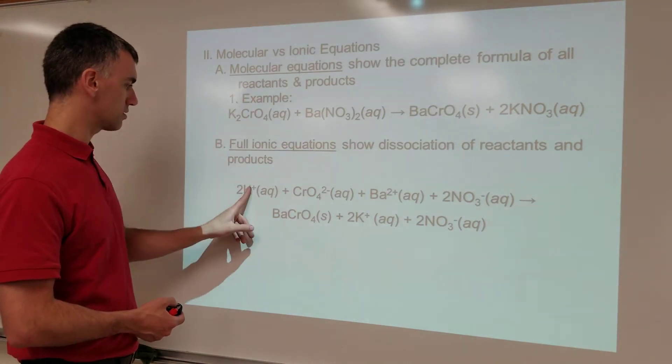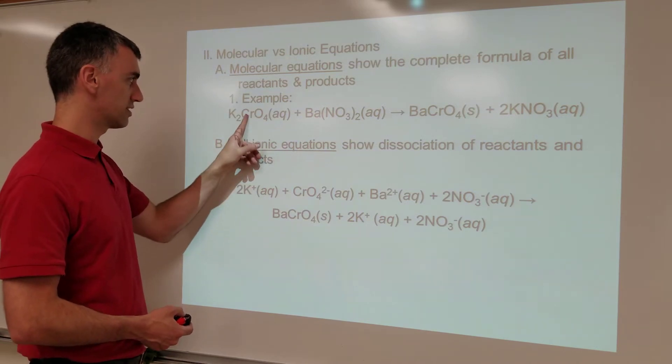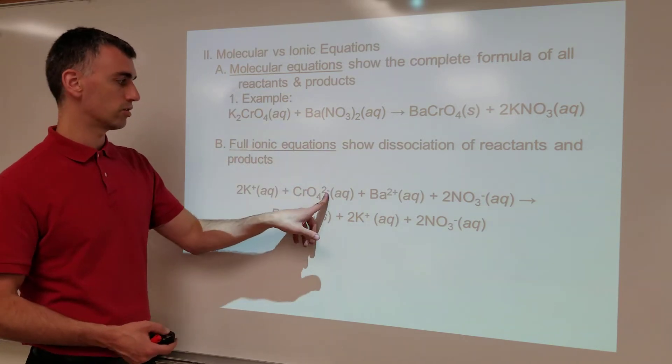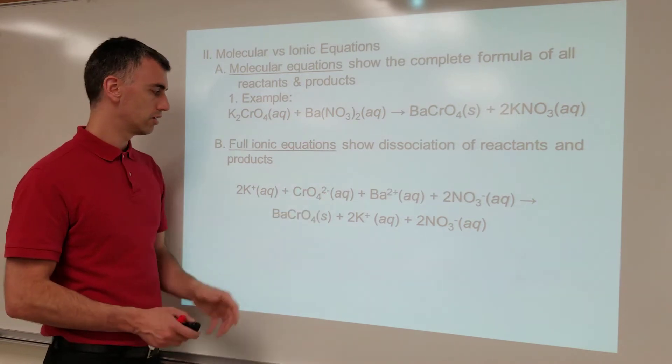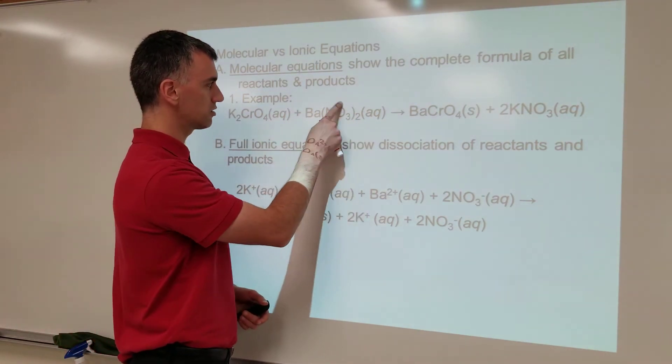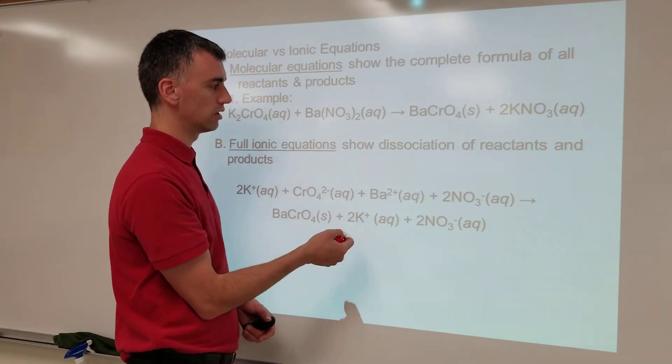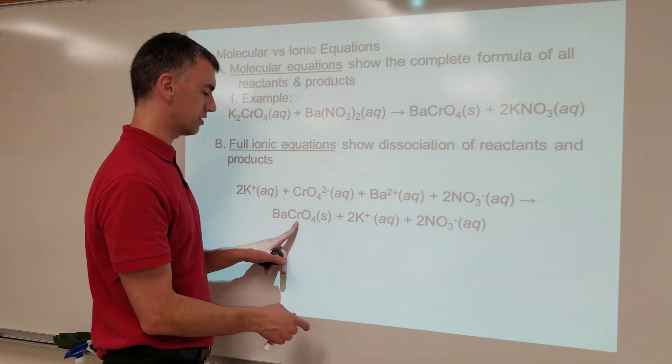Notice, two potassiums, two potassiums. One chromate ion, this is one single chromate, makes one single chromate ion. Notice we put the charge on there. Notice each one is labeled as aqueous because it's dissolved in water. One barium, two nitrates. That's the reason for this, and nitrates of minus one. But notice, wait, what happened here?